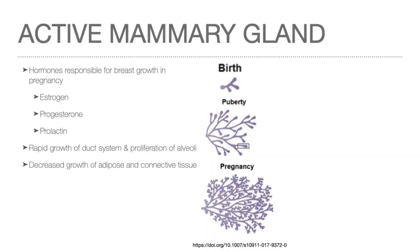The active mammary gland is seen during pregnancy. Elevated levels of estrogen and progesterone result in a rapid increase in length and branching of the duct system, concomitant with a decrease in the adipose and connective tissue surrounding the lobules. Prolactin promotes the growth of mammary alveoli, but actual milk production, which is stimulated by prolactin, is inhibited by the estrogenic and progesterone-rich hormonal environment.